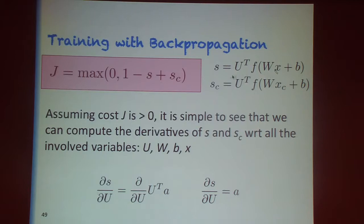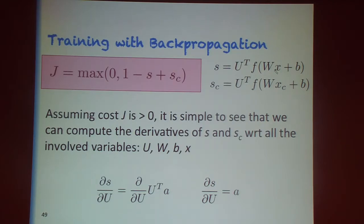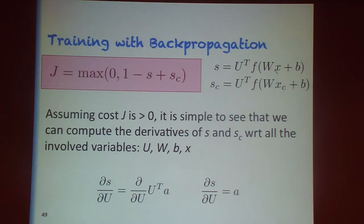If the cost is just zero — meaning the score of the good sequence is already significantly higher — then there's nothing our model needs to learn. If the cost is greater than zero, we compute the derivatives with respect to all variables u, W, b, and x, which gives us the gradient we can then use with stochastic gradient descent or other methods.